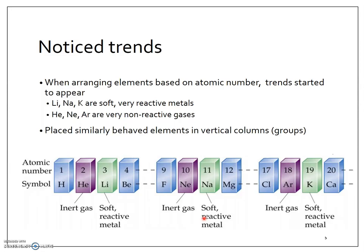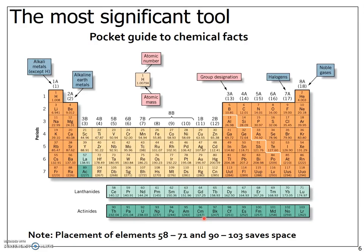So in addition to the range in increasing atomic number, they started organizing it by these trends. And so they placed similarly behaved elements in vertical columns, what we call groups.